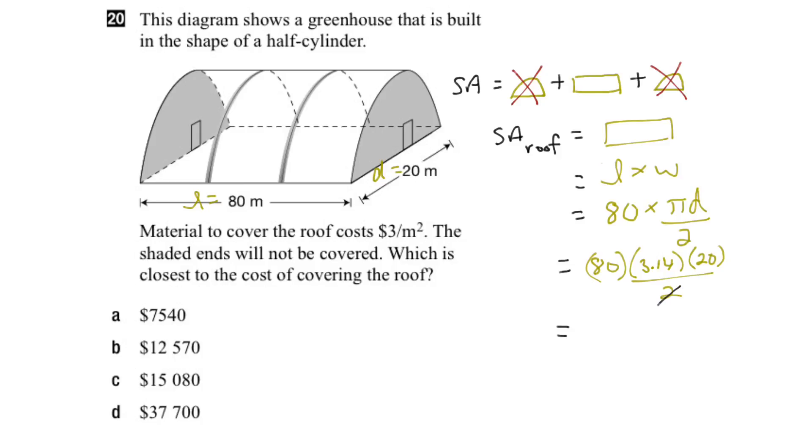So we can cancel the 2 here with the 20, and that would equal 10. 10 times 80 is 800, and then times 3.14,